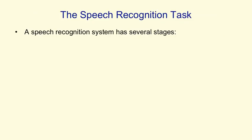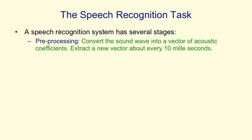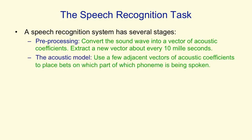Another task that neural nets are now very good at is speech recognition — or at least part of a speech recognition system. Speech recognition systems have several stages. First, they pre-process the sound wave to get a vector of acoustic coefficients for each 10 milliseconds of sound, giving 100 vectors per second. They then take a few adjacent vectors and place bets on which part of which phoneme is being spoken. A good system has many alternative models for a phoneme, each with multiple parts, giving many thousands of alternative fragments to place bets on.